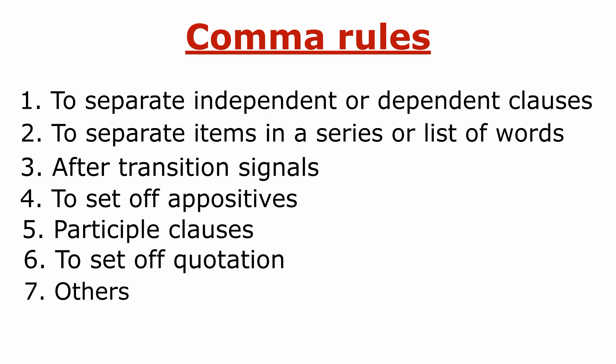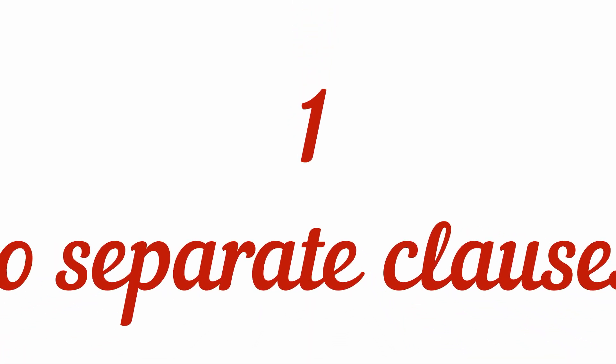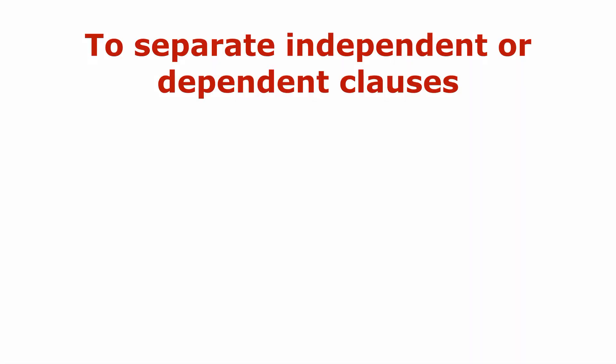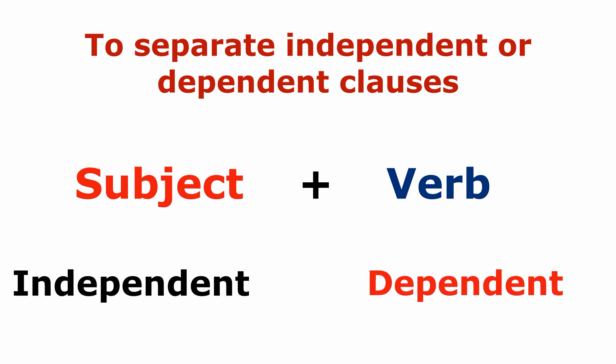However, in this video we will mostly concentrate on basic rules. So, let's start with sentences. A sentence in English must have a subject and a verb. As you know, there can be several sentences joined together. They can be both independent and dependent.